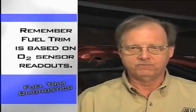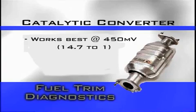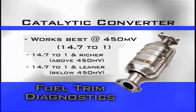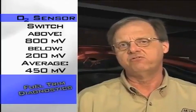Fuel Trim is based on O2 sensor input. What should the O2 sensor input be? They'll say 450 millivolts — well, that's the middle, and that's 14.7 to 1. One part of your catalytic converter works at 14.7 to 1 and richer, which gets rid of the NOx. The other part works at 14.7 to 1 and leaner, which gets rid of HC and CO. So you need to go slightly rich part of the time and slightly lean part of the time. What you're looking at on your O2 sensor is switching above 800 millivolts and below 200 millivolts, averaging about 450 millivolts. This is for a proper operating system.